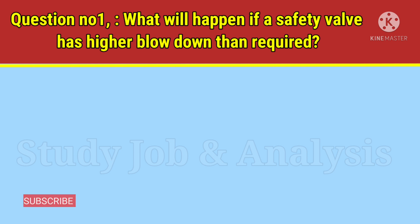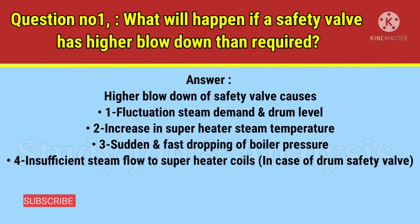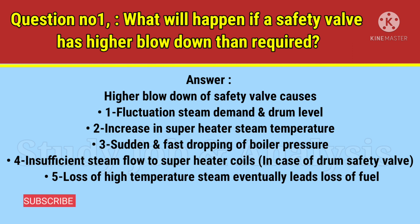Answer: Higher blowdown of a safety valve causes: one, fluctuation in steam demand and drum level; two, increase in superheater steam temperature; three, sudden and fast dropping of boiler pressure; four, insufficient steam flow to superheater coils in case of drum safety valve; five, loss of high temperature steam, which eventually leads to loss of fuel.